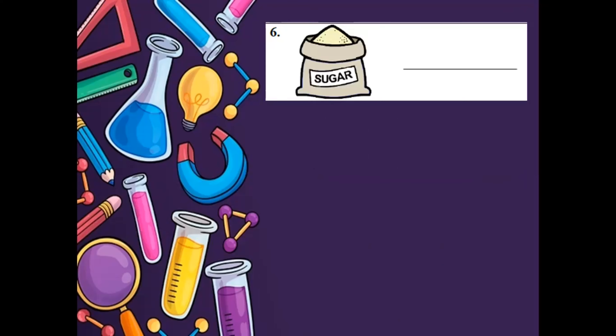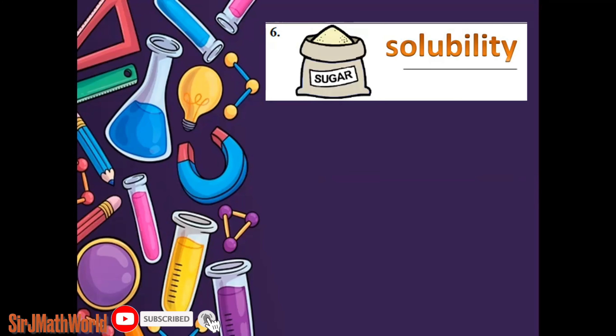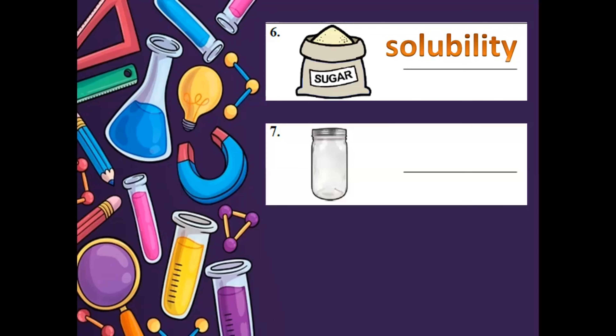Number six, we have sugar. What property of materials can be used to describe sugar? We can use solubility. Solubility is the ability to dissolve — natutunaw siya pag na-mix sa ibang matter. Si sugar kapag nilagay natin sa water, natutunaw siya — soluble. So the property is solubility.